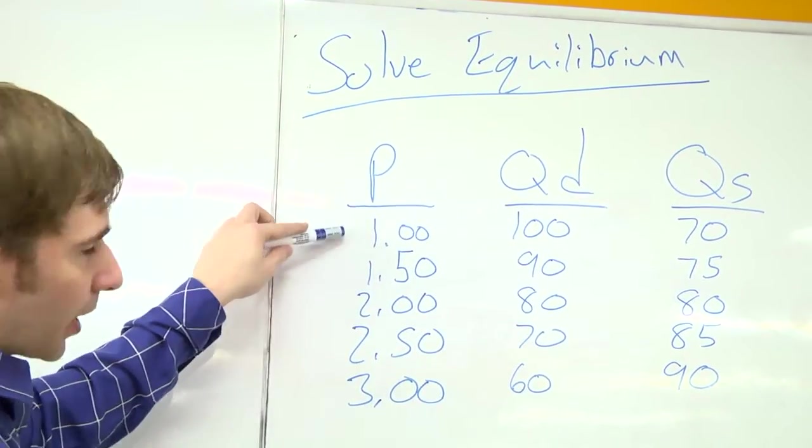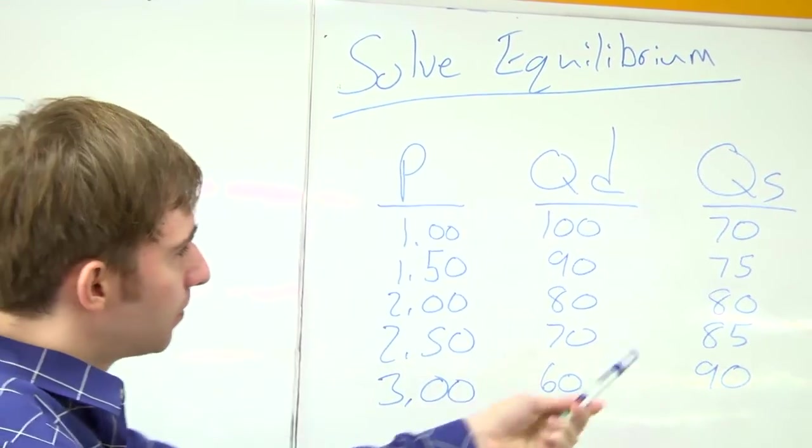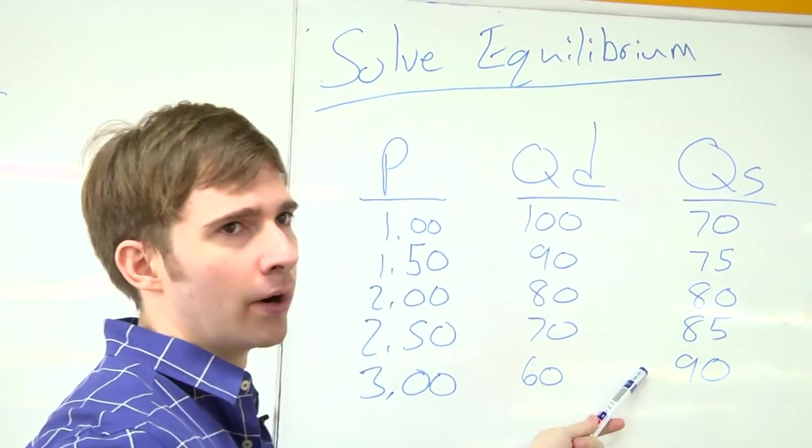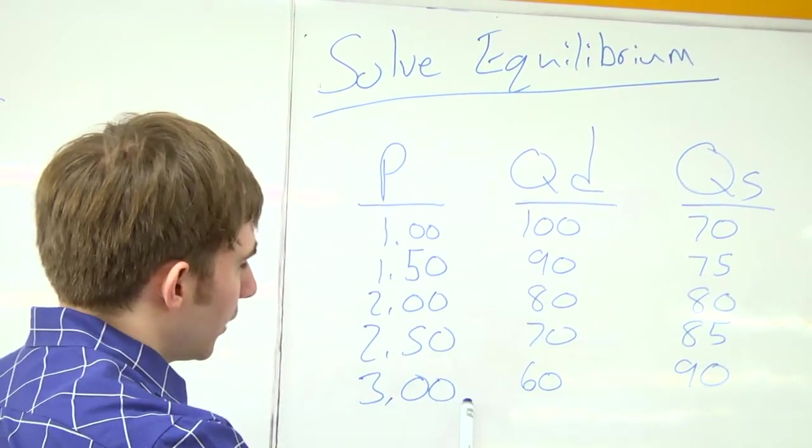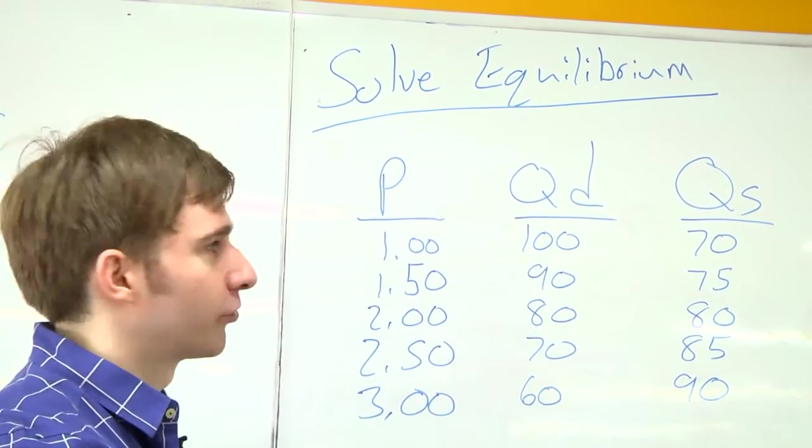So as the price gets larger, people are willing to sell more. But as the price gets larger, people demand less.